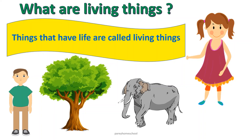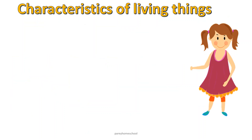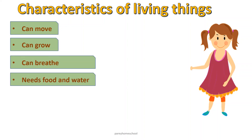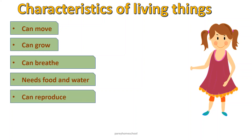Now we will see a few of the characteristics of living things. Living things can move from one place to another. Living things can grow. Living things can breathe. Living things need food and water. Living things can reproduce. These are the characteristics of living things.